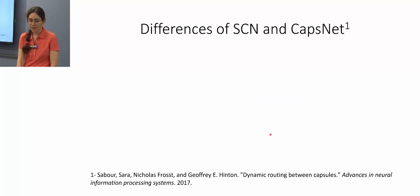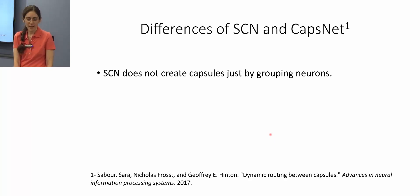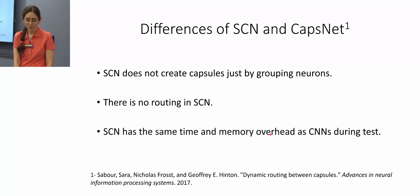What is the difference between our proposed Subspace Capsule Network and the original capsule network? In SCN, we do not simply group neurons to create capsules, and we don't need any routing. During test time, SCN has the same time and memory overhead as CNN models.